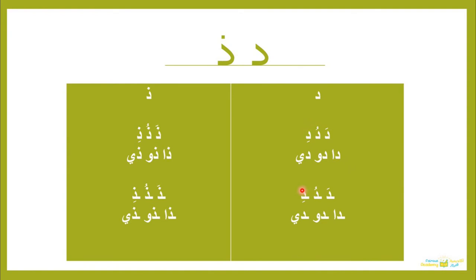Now let's explain the concept of vowels attached to letters. The Dal with the fatha on top sounds like 'Da'. With the dhamma it sounds like 'Du'. With the kasra at the bottom it sounds like 'Di'. With the alif as a long vowel it sounds like 'Daa'. With the waw it sounds like 'Duu'. With the ya it sounds like 'Dii'.